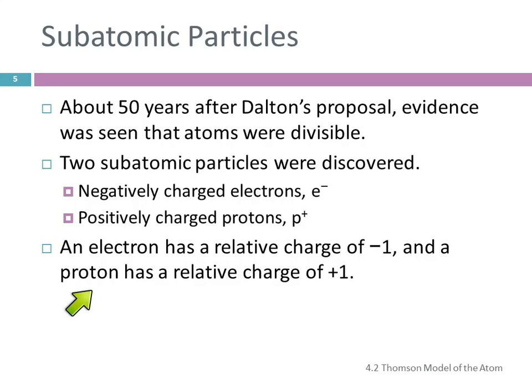An electron has a relative charge of minus 1, and a proton has a relative charge of plus 1. We do know what their actual charges are, but for the purposes of chemistry, we just need the relative charges — one's positive, one's negative, and they're equal in magnitude.